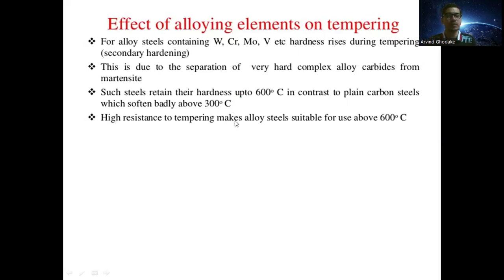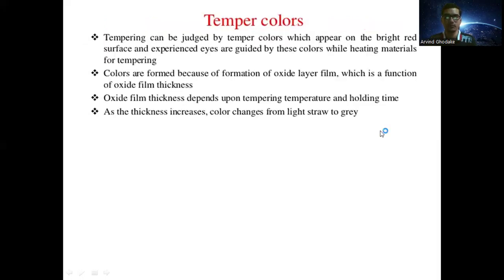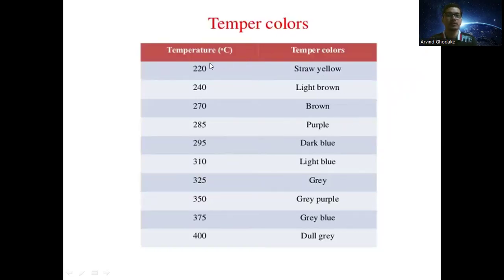High resistance to tempering makes alloy steel suitable for use above 600°C. Tempering can be judged by temper colors, which appear on a bright polished surface. Experienced eyes are guided by these colors while heating materials for tempering. The colors are formed because of an oxide layer film, which is a function of oxide film thickness. Oxide film thickness depends upon the tempering temperature and holding time. As thickness increases, color changes from light straw to gray.